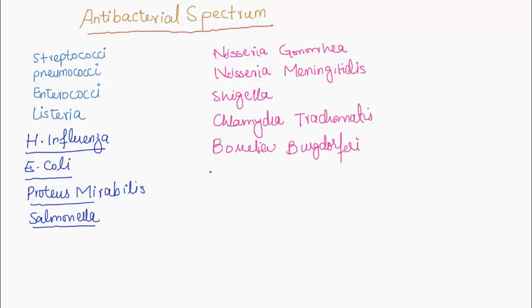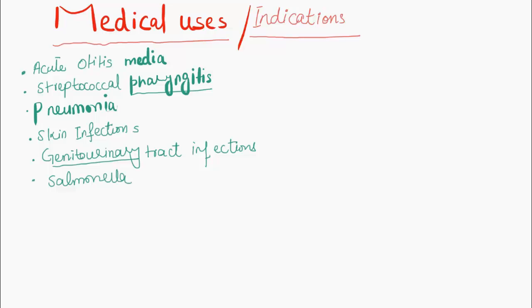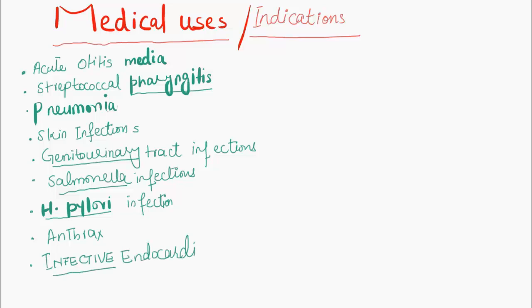Indications or medical uses of amoxicillin: it is used in treatment of a number of infections including acute otitis media, streptococcal pharyngitis, pneumonia, skin infections, genitourinary tract infections, Salmonella infections, Helicobacter pylori infection, anthrax, infective endocarditis, and Lyme disease.